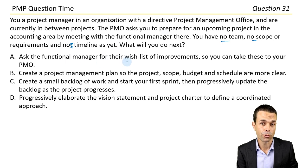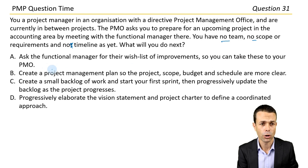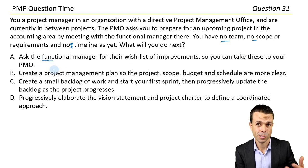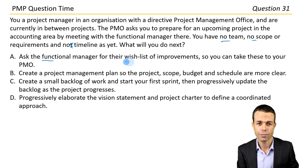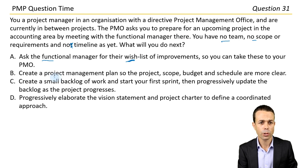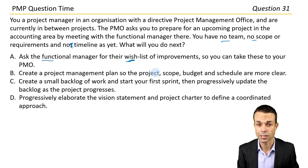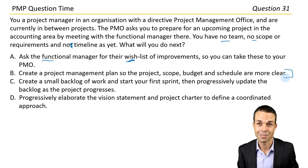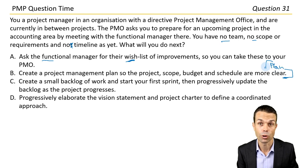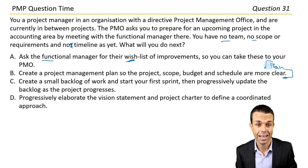Option A: Ask the functional manager for their wish list of improvements so you can take these to your PMO. Maybe — we could prioritise those. But I wonder if there are any better options. Option B: Create a project management plan so the project scope, budget and schedule are more clear. I think we'll do that once we have kicked off the project. Before that stage, there's no project in existence, so why do a plan necessarily?